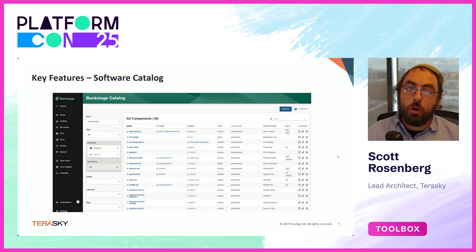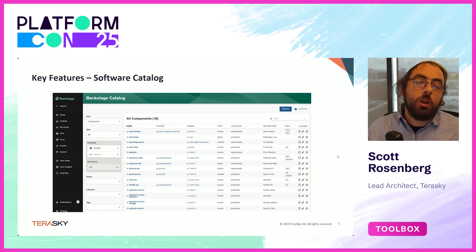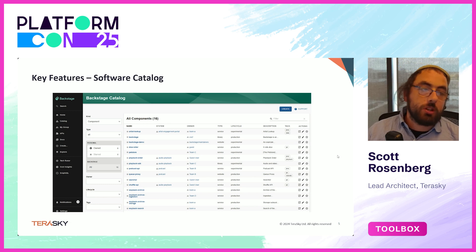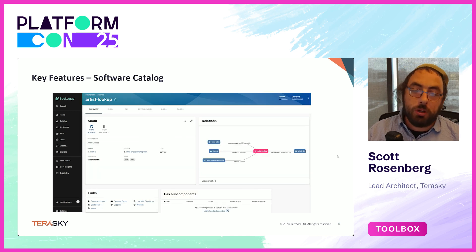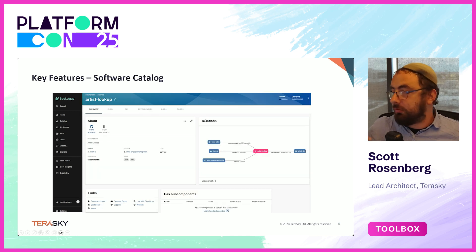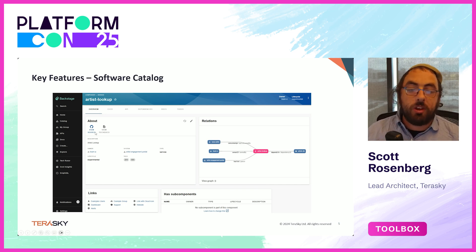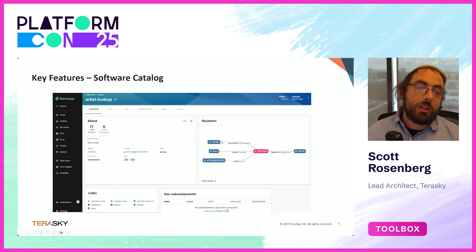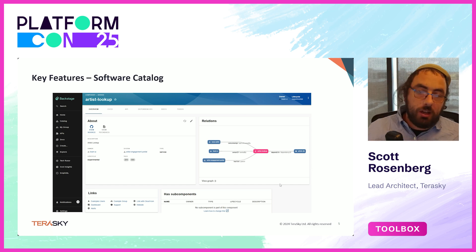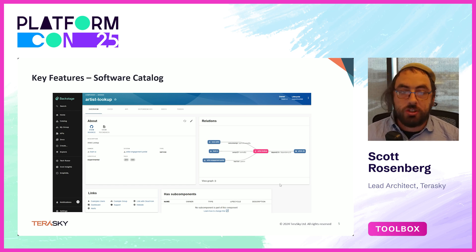One of the key features is the software catalog, where we can see all the different components of our organization. We add them to this catalog and can see different types of components. When we go into any of these components, we can view a bunch of different tabs to get different data — different plugins can bring in more data. We can go to the source code of a component or provide relevant links. We can also see relationships between different components: what's part of what, what's dependent on what, and who owns what, making it really easy to understand the topology of our applications.